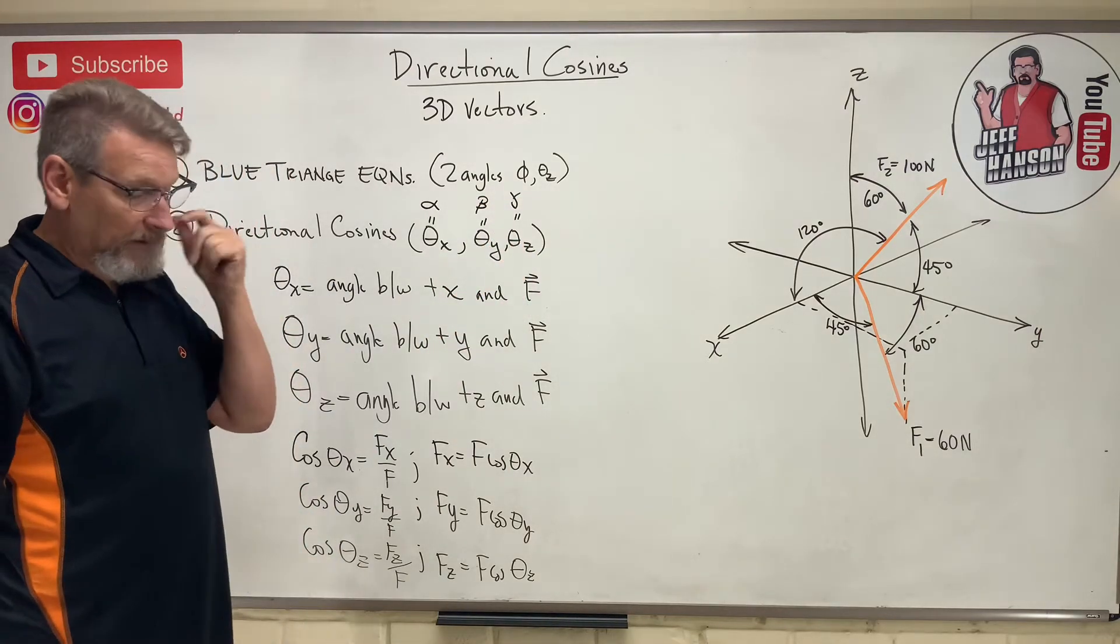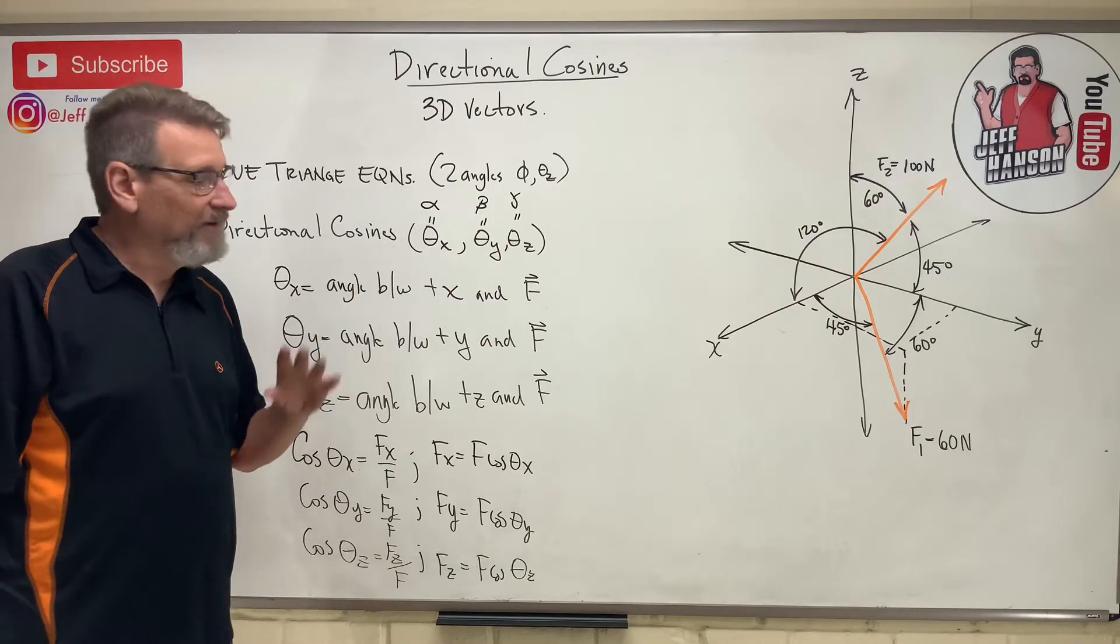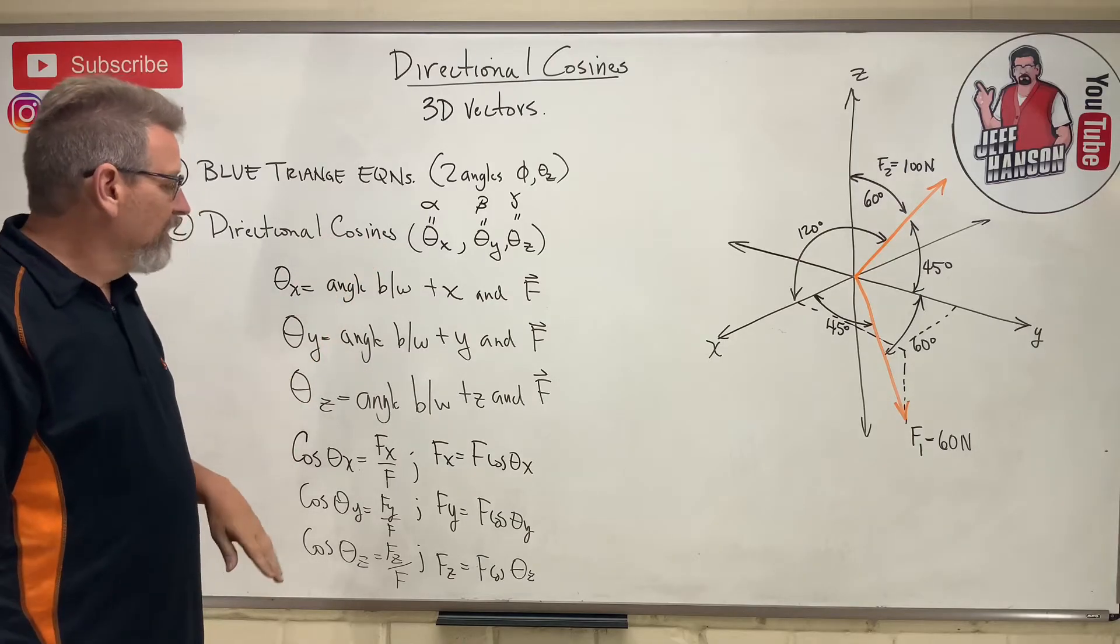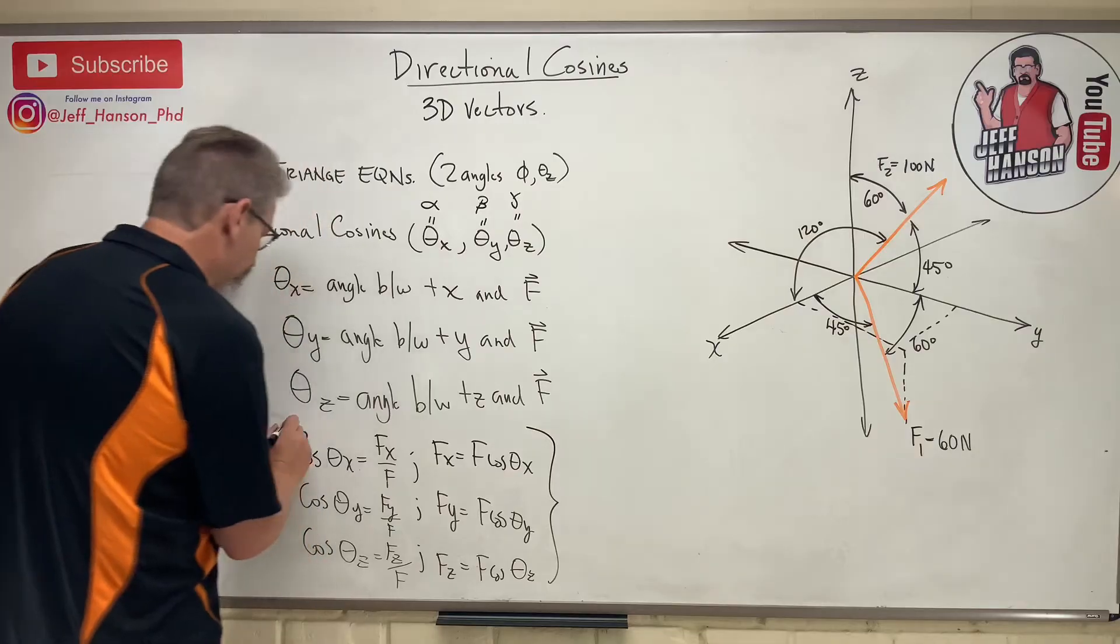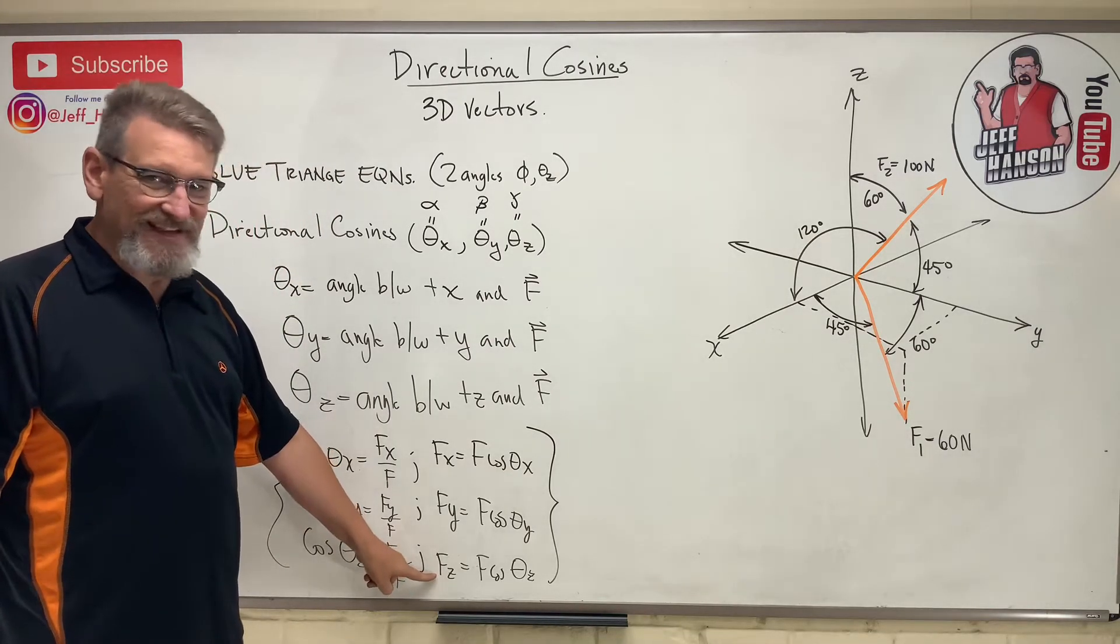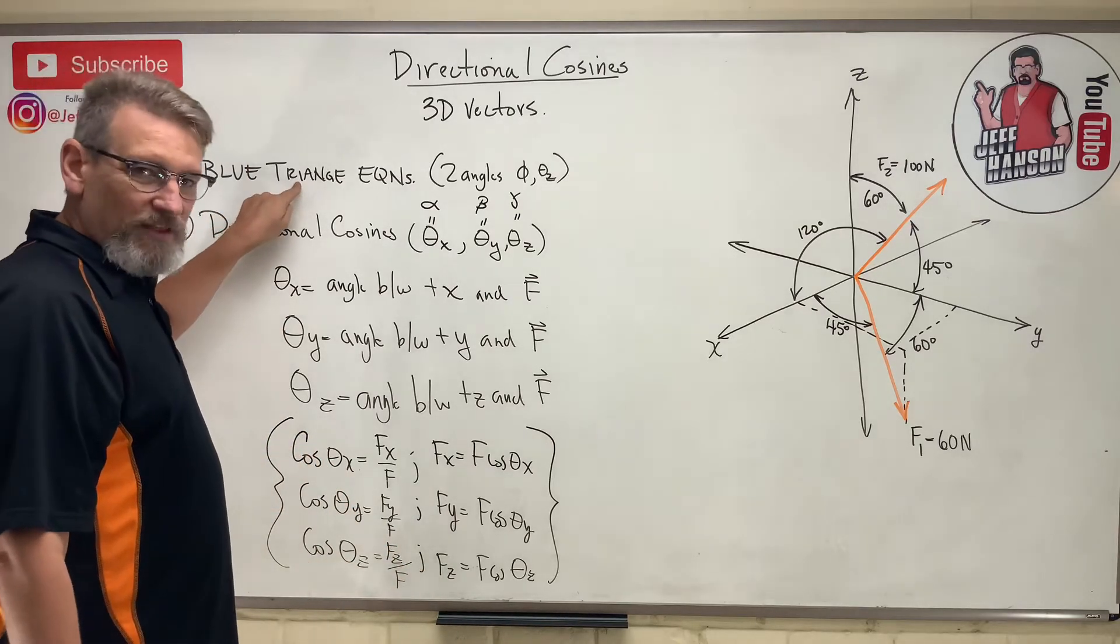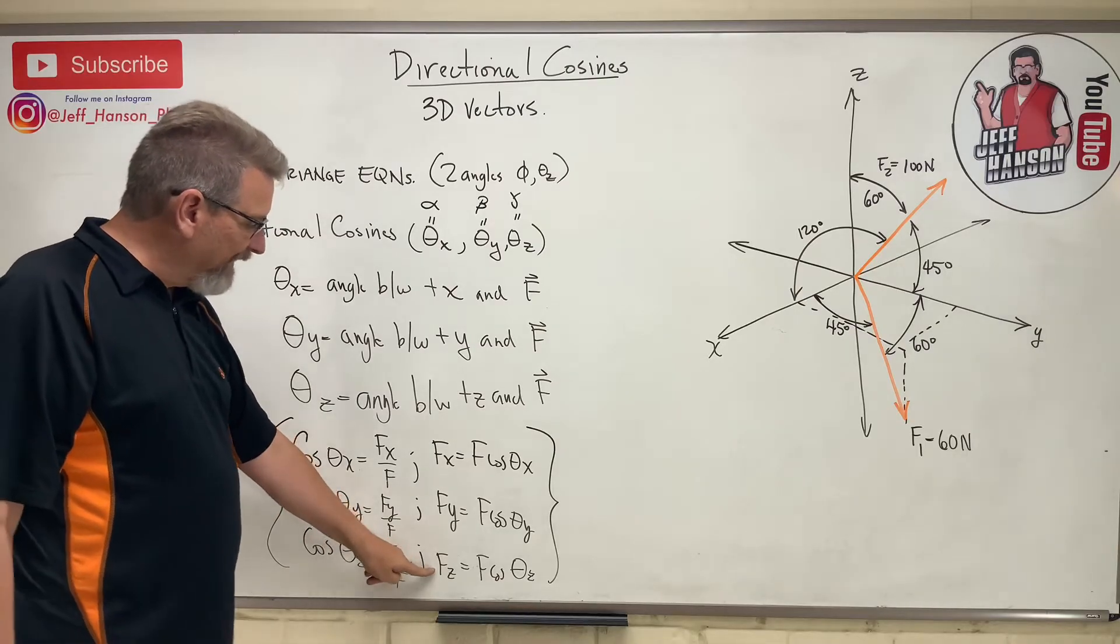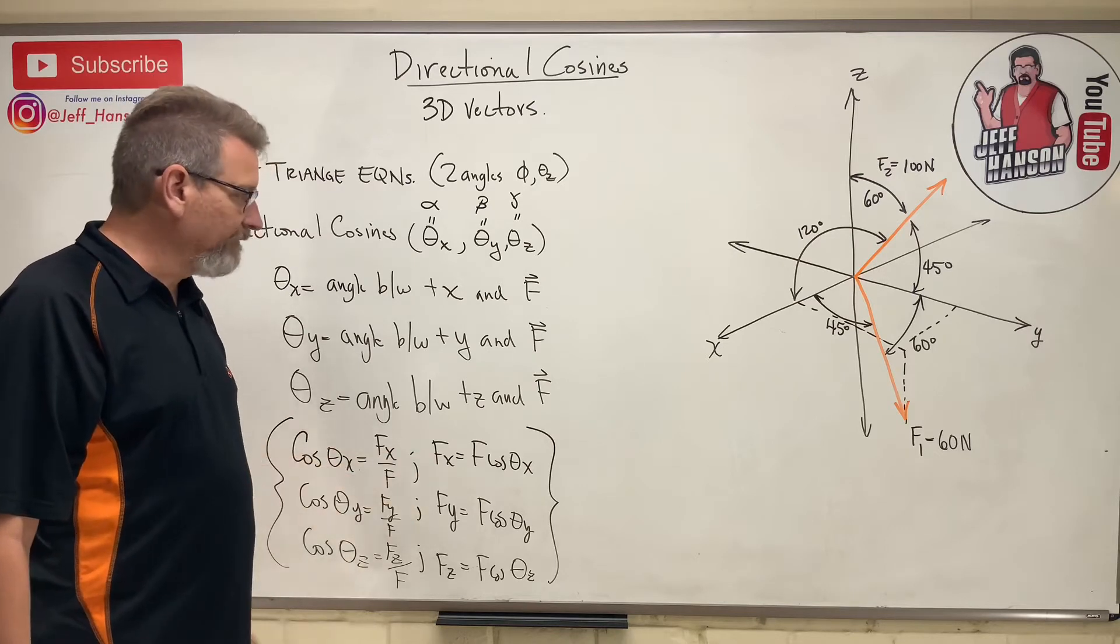You'll see that in the book, but don't be afraid. I like theta x, y, and z. I think it's much more descriptive. These right here are your directional cosine equations. Notice fz. That's the exact same equation for fz that we had in blue triangle equations, but we've just repeated that for the other two components, fx and fy.